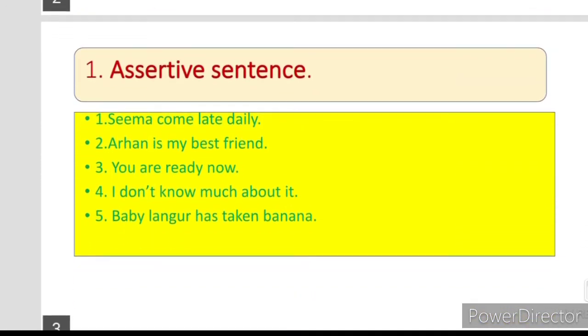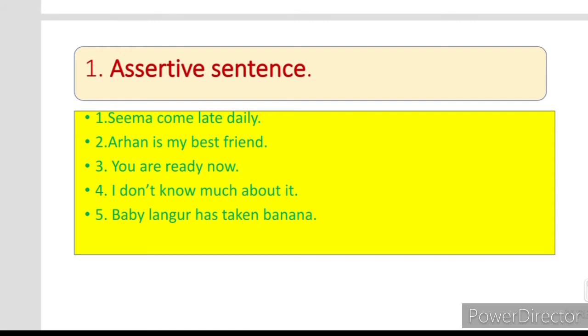First of all assertive sentence. Assertive sentence is the sada wayaniyah jubala. Number one, Seema come late daily. Seema Rosanna Delhi seate hai. You are ready now. I don't know much about it. Baby langur has taken banana. Baby langur banana yani Kayla le chuka.